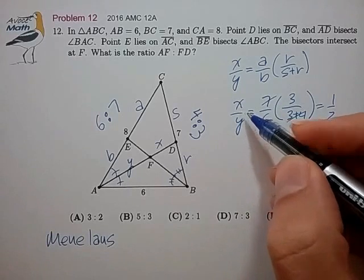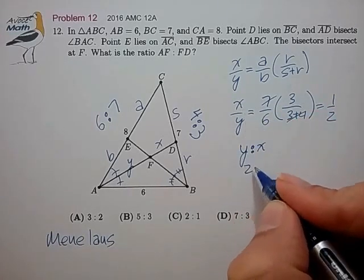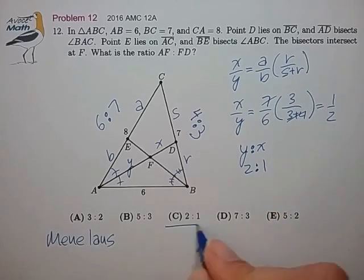And we quickly see now that this is just equal to 1 half. And the ratio we're trying to find is Y to X, and that's just 2 to 1. And that's choice C.